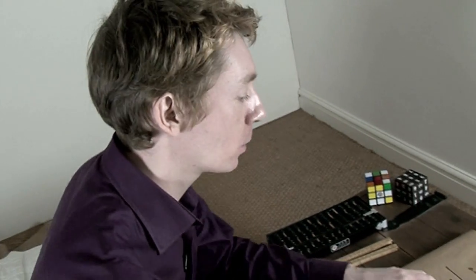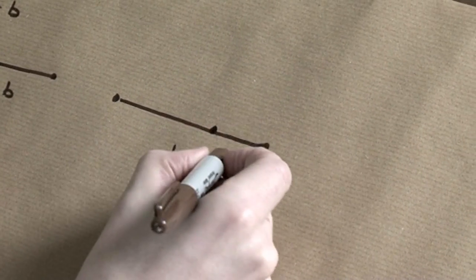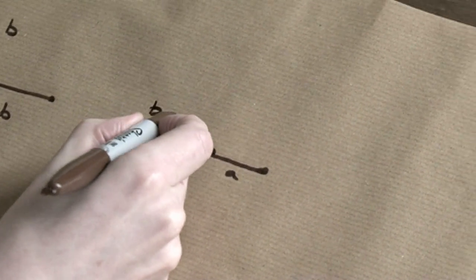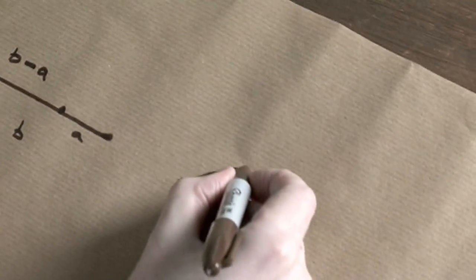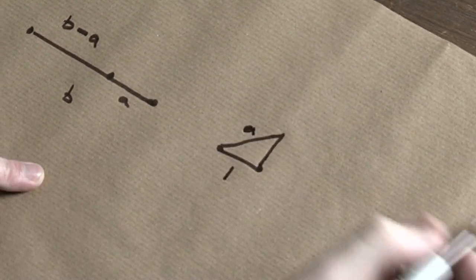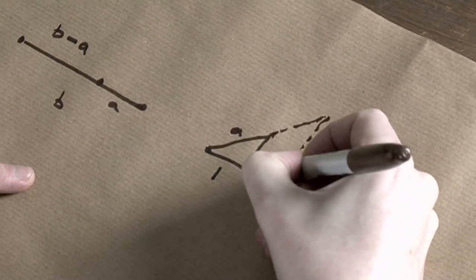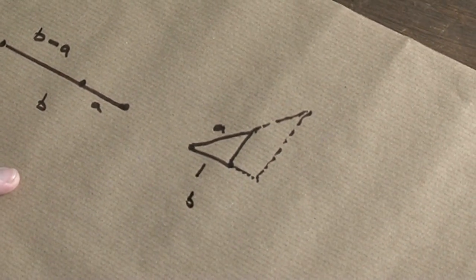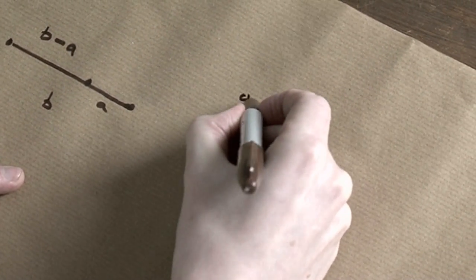You can subtract numbers as well. If I start with b and then mark off a length a, then this bit here is b minus a. We can also multiply. If I draw a little triangle where this has length 1 and this has length a, I can scale up the triangle so that this has length b — and then the other side scales up so that this has length a times b.